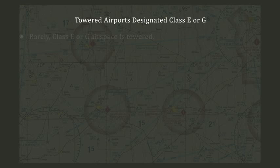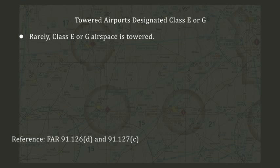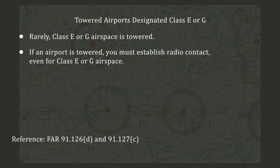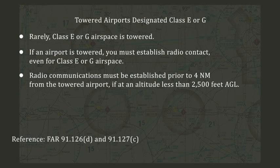While the vast majority of towered airports are designated Class D, C, or B airspace, it is possible for an airport in Class E or G airspace to be towered. As you can see in 91-126-D and 91-127-C below, if a control tower is present and operational, you must establish radio communications prior to 4 nautical miles from the airport, up to and including 2,500 feet AGL. Notice this area is identical to the typical size of a Class D airspace area.